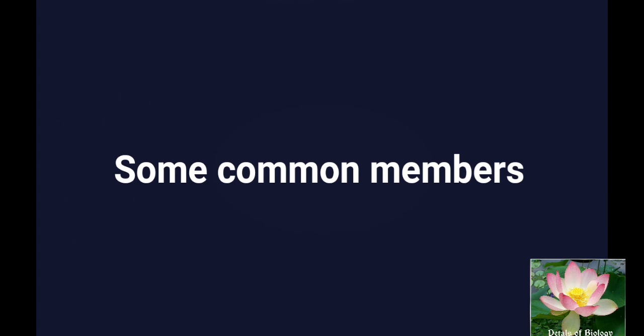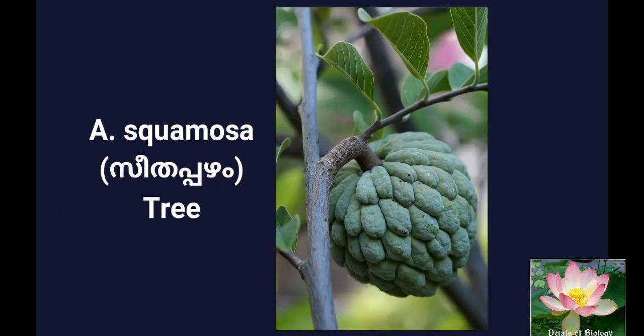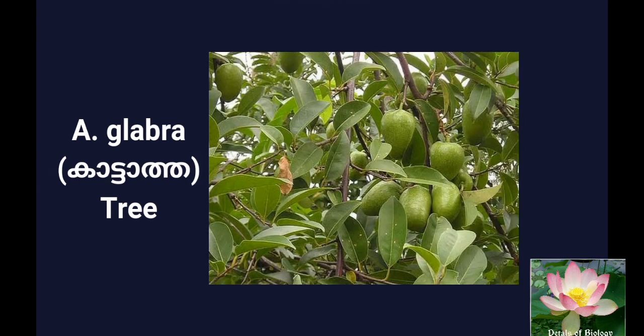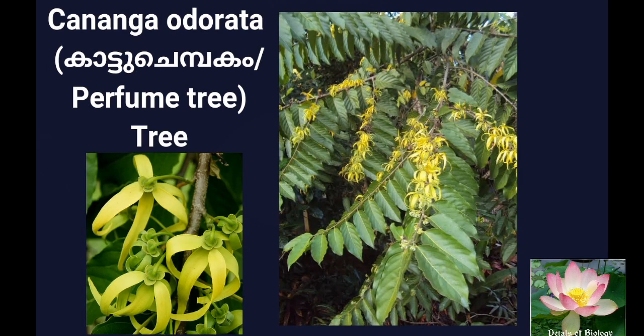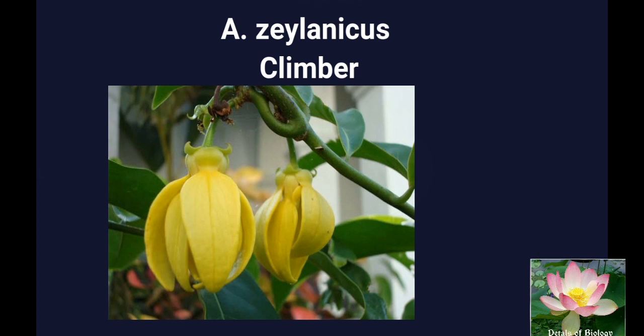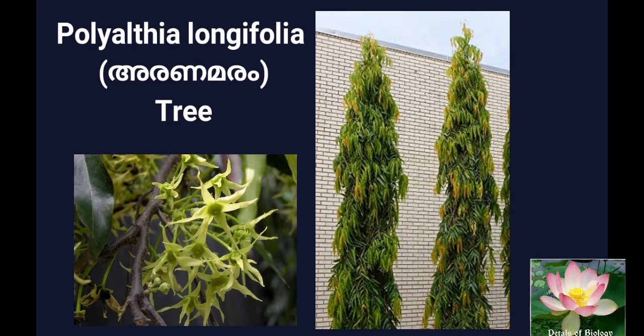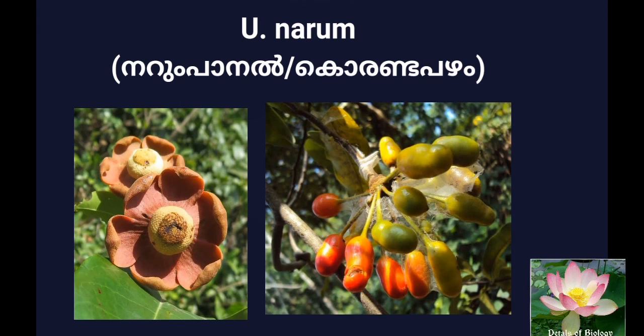Let us see some of the common members of the family: Anona reticulata, Anona cherimola, Anona squamosa, Anona glabra, Anona muricata, Kananga odorata, Artabotrys hexapetalus, Artabotrys salinichus, Polyalthea longifolia, Uvaria salinica, Uvaria narum, Phaeanthus malabaricus, Sageria laurina, Cyatocalyx salinica, etc.